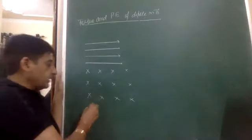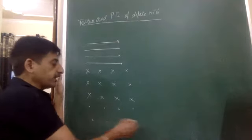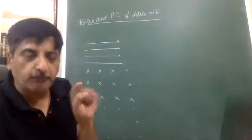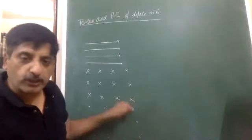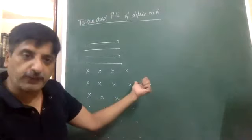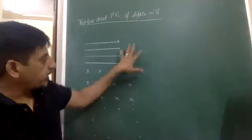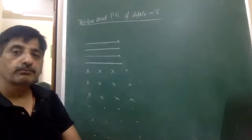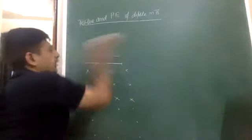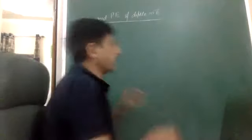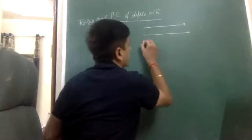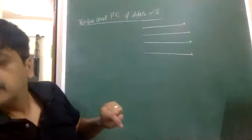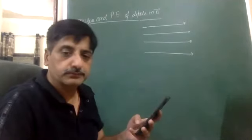We consider a south pole and equidistant setup in a uniform magnetic field. The magnetic field is perpendicular to the plane — outward in one representation and inward in another. This uniform magnetic field pervades the entire region.